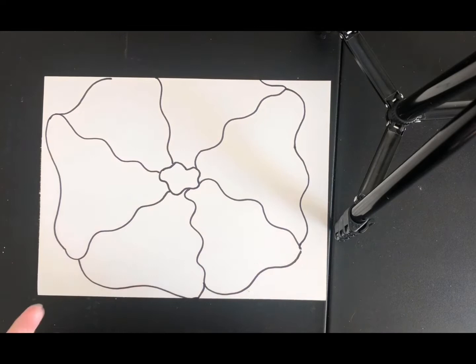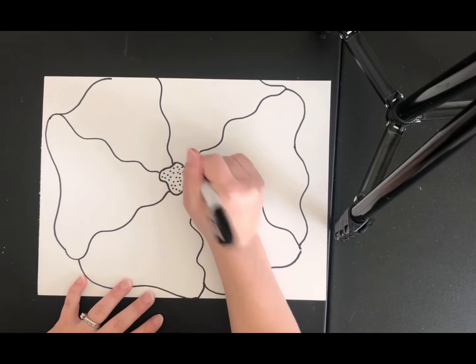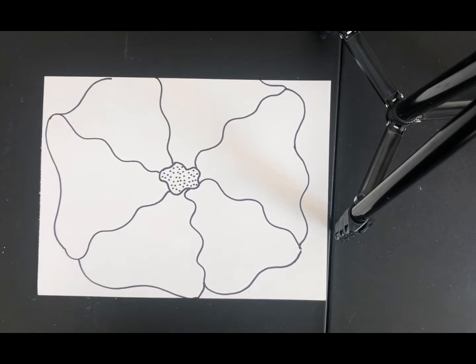So this creates this very organic abstract flower and you can even add some dots in the center because a lot of flowers have seeds. And this will help create that illusion that there's seeds in the center. That helps define your center.